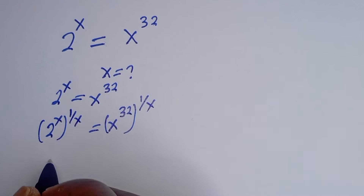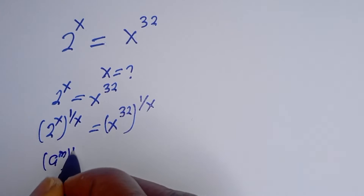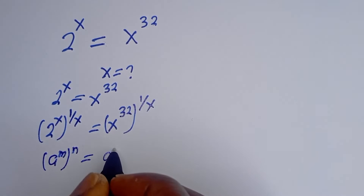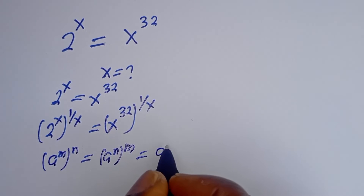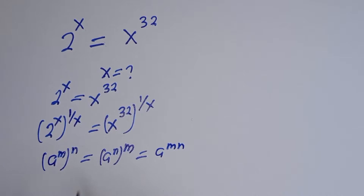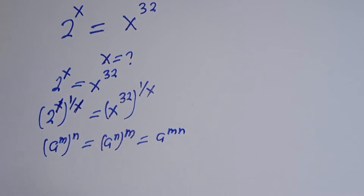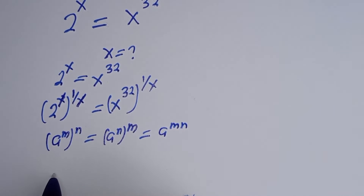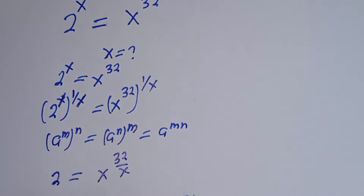Take note of this rule: if you have A to the power of M to the power of N, this is equal to A raised to the power of N to the power of M, which equals A raised to the power of M times N. From here, this will cancel this. We have 2 is equal to S to the power of 32 over S.